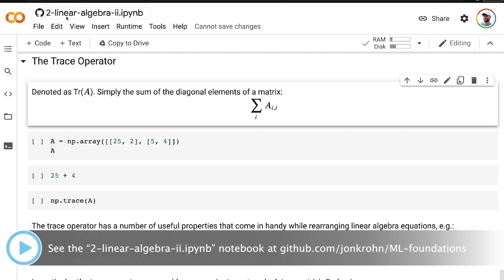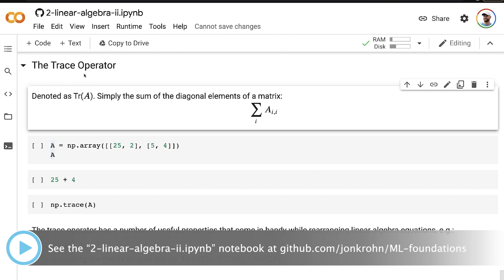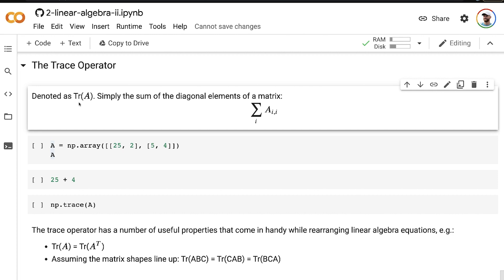Back in our linear algebra 2 notebook, we are at the section called trace operator, and the trace operator is denoted as capital T, lowercase r, open bracket, your matrix, say matrix A, close bracket. And despite the funky notation, the trace operator is pretty simple.